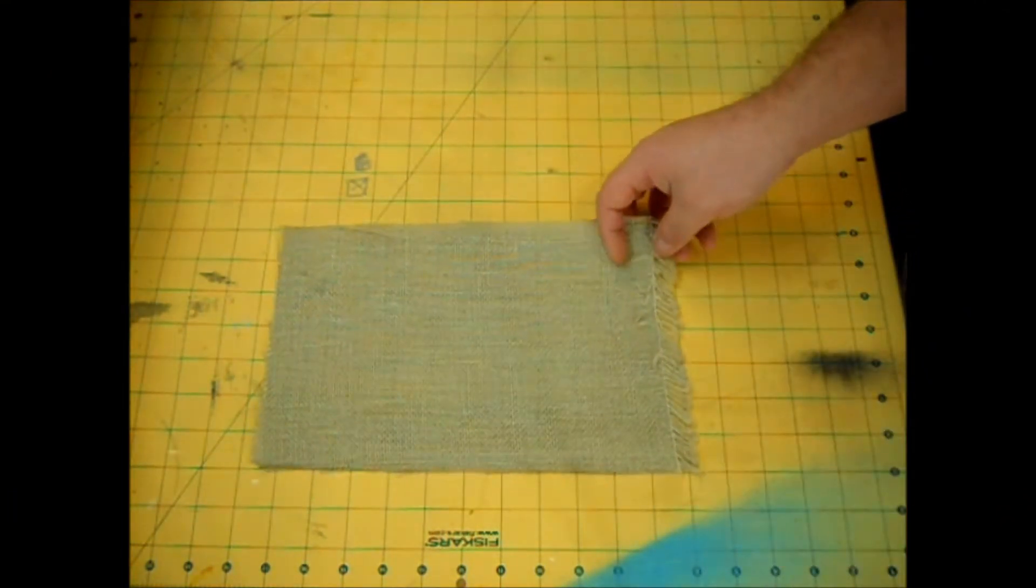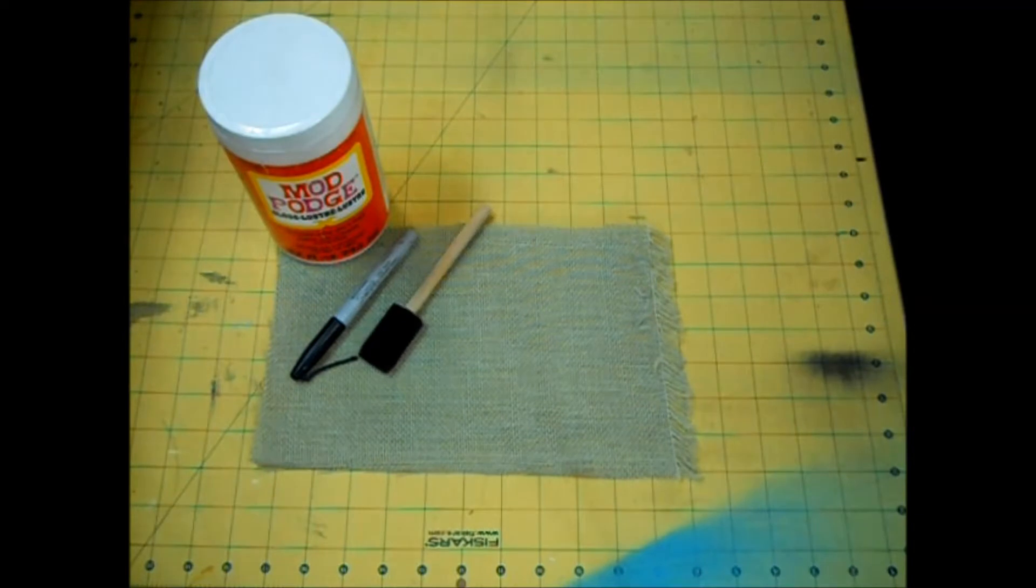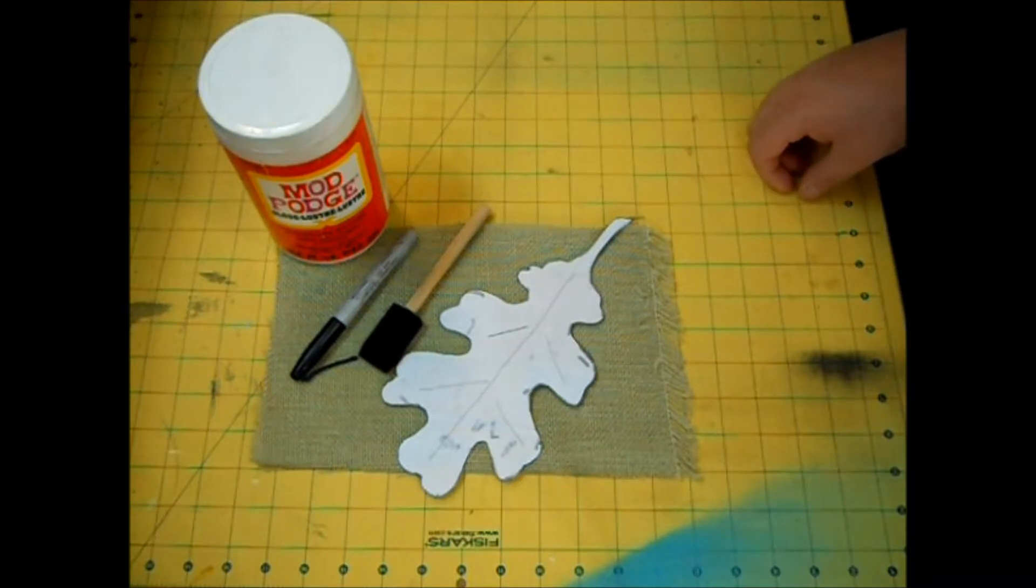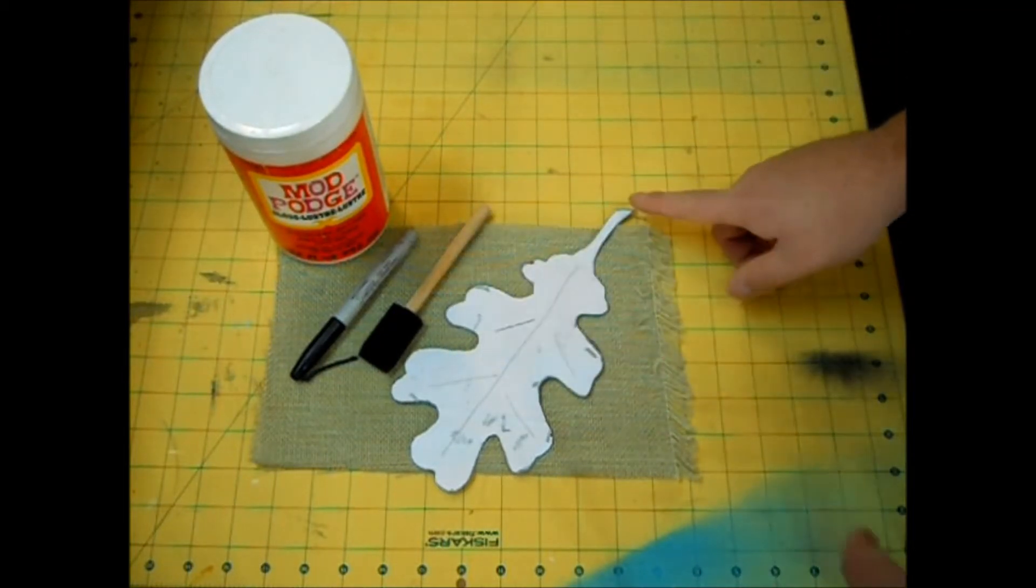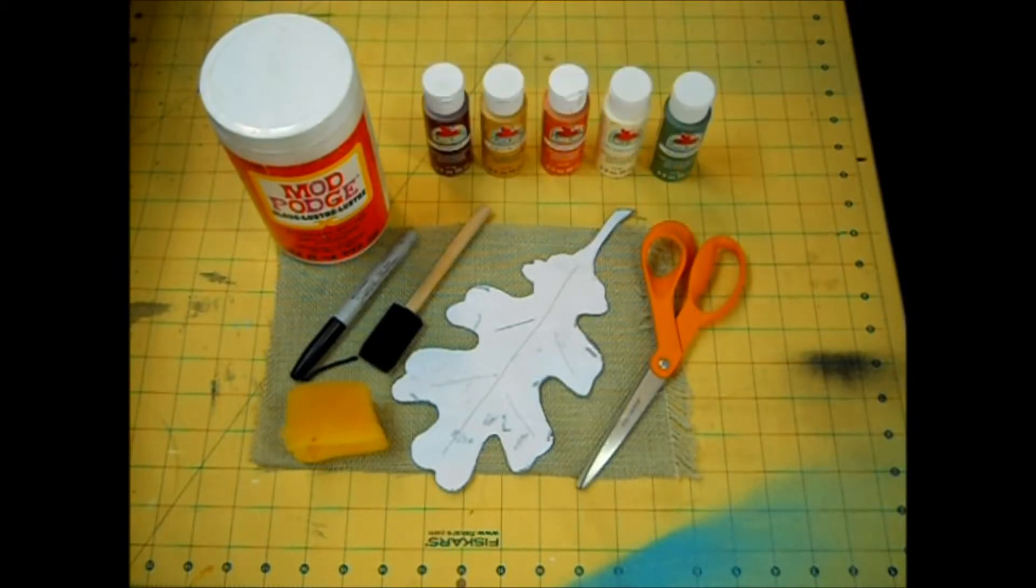you're going to need some burlap, some mod podge, a sharpie marker, a foam brush, you're going to need a leaf template. All I did was go to Google Images, search for leaf templates, and trace it right off my computer screen. This is about 5 inches wide and 10 inches long. You'll also need some scissors, a chunk of sponge for painting, as well as assorted acrylic paints in fall colors.